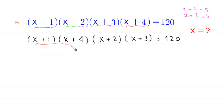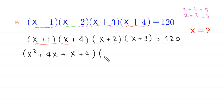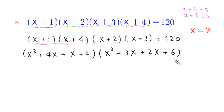We expand these two pairs. (x+1)(x+4) = x²+4x+x+4 = x²+5x+4. And (x+2)(x+3) = x²+3x+2x+6 = x²+5x+6. So we have (x²+5x+4)(x²+5x+6) = 120.